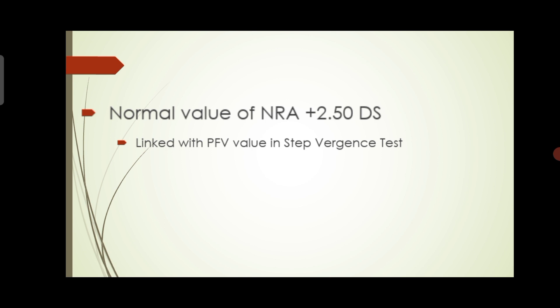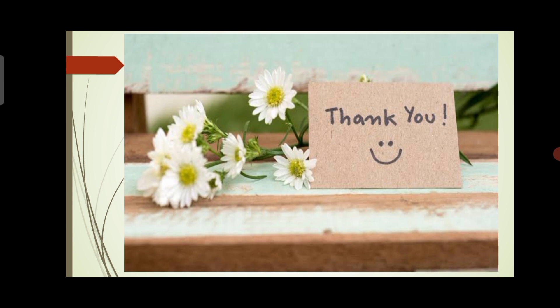If NRA is very low — less than +2.00 — the patient cannot relax accommodation. If NRA is too high, either the patient can relax accommodation very well or the refraction may be incorrect; it should be around +2.50 to +3.00, not more. NRA indicates whether the patient has accommodative excess or accommodative insufficiency. In accommodative excess, it is difficult to relax accommodation, resulting in a low NRA value. Keep these points in mind while measuring Negative Relative Accommodation.